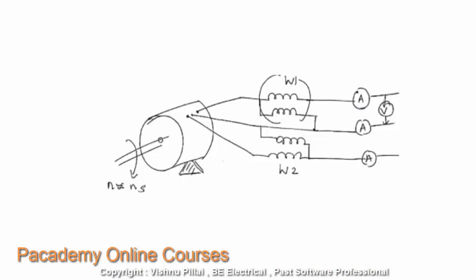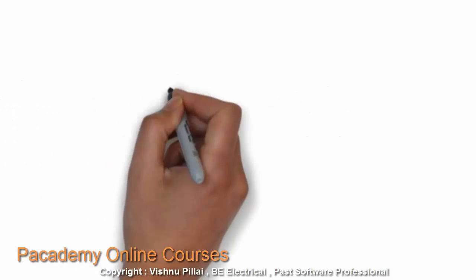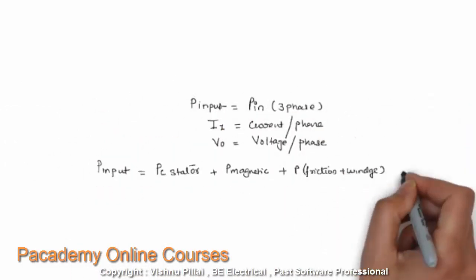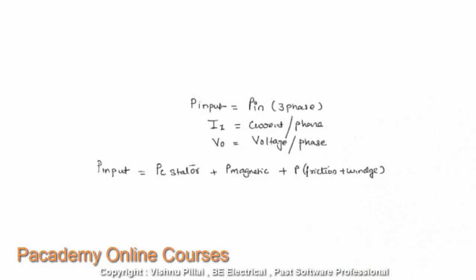This is the arrangement of the no load test. Like the no load test in a transformer, the shaft is not connected to any load — no mechanical work is delivered — and it is free to rotate. The three-phase power is measured using the two-wattmeter method, the current in each phase is measured using an ammeter, and the supply voltage is measured using a voltmeter. I1 is the current per phase and V0 is the no load voltage.